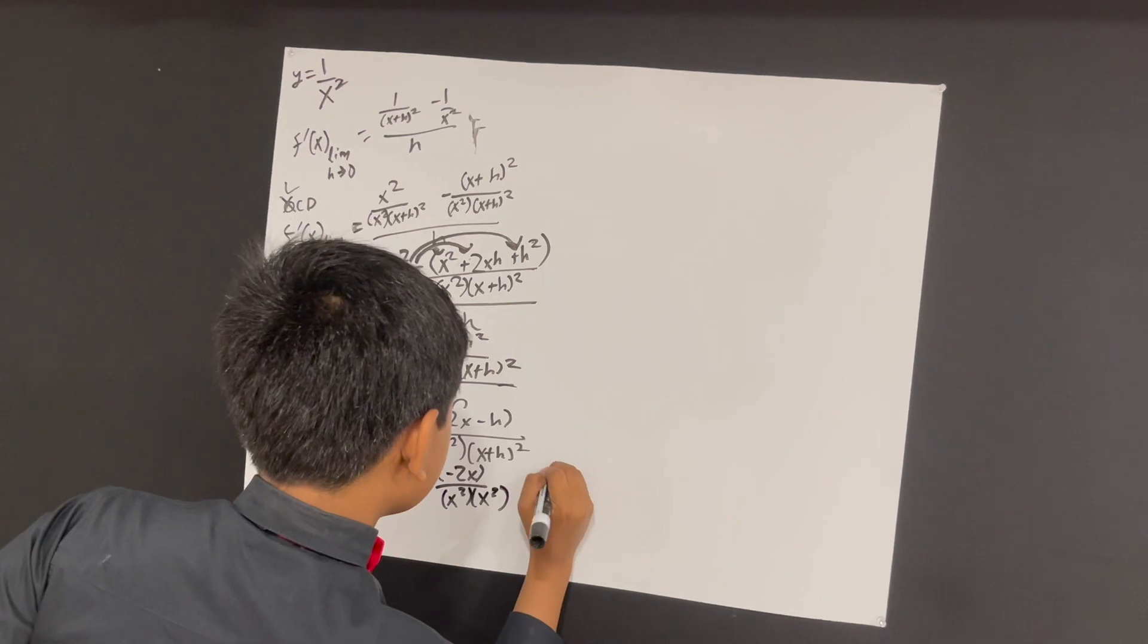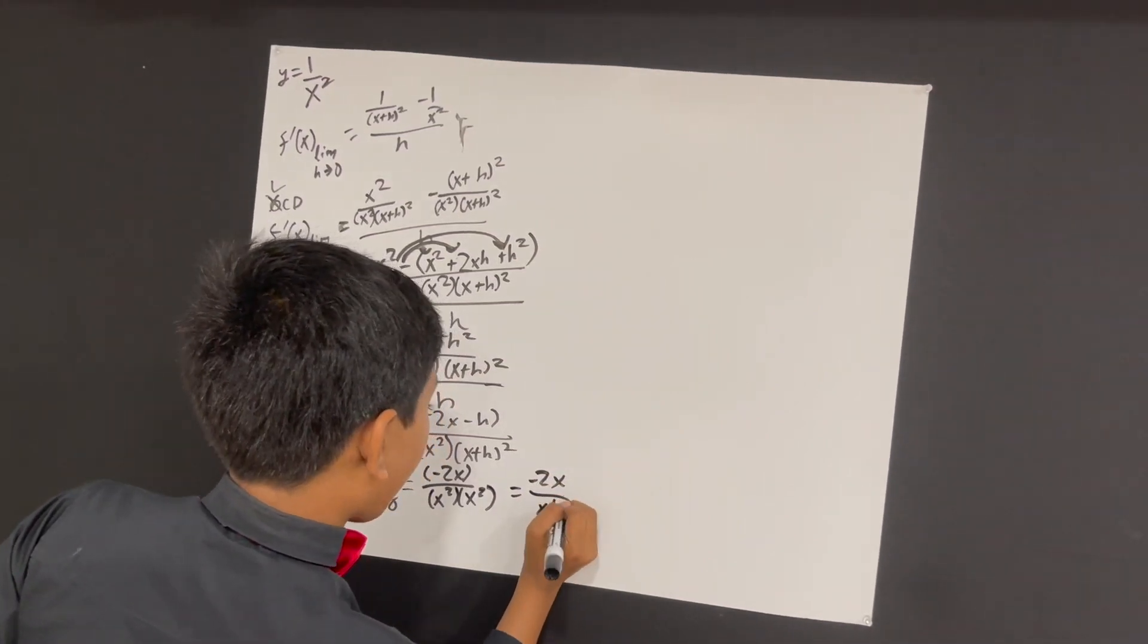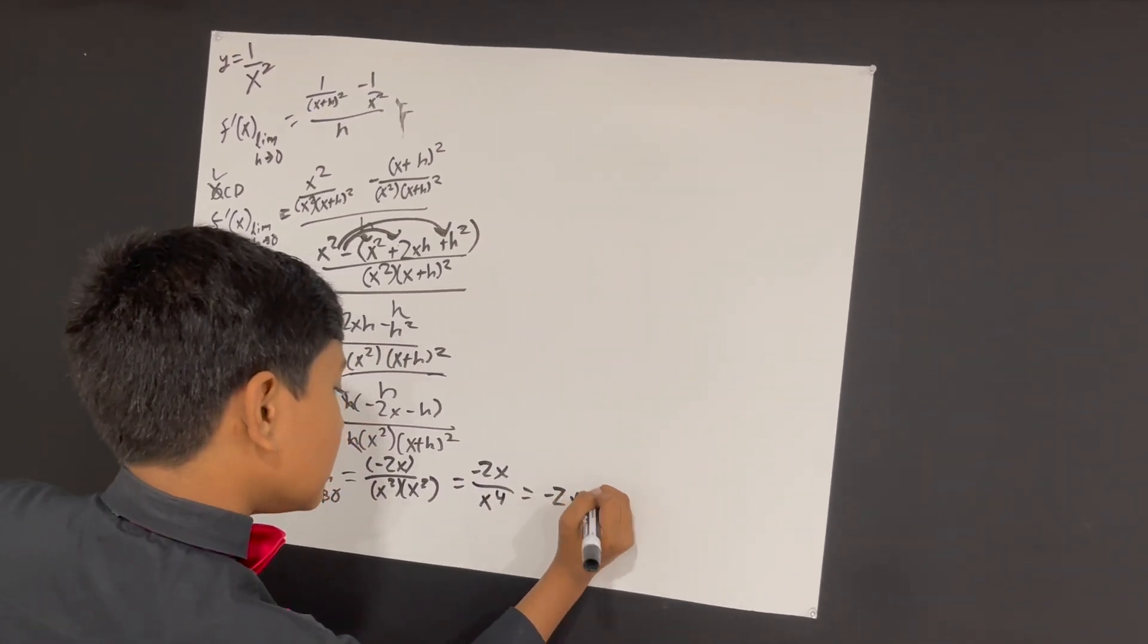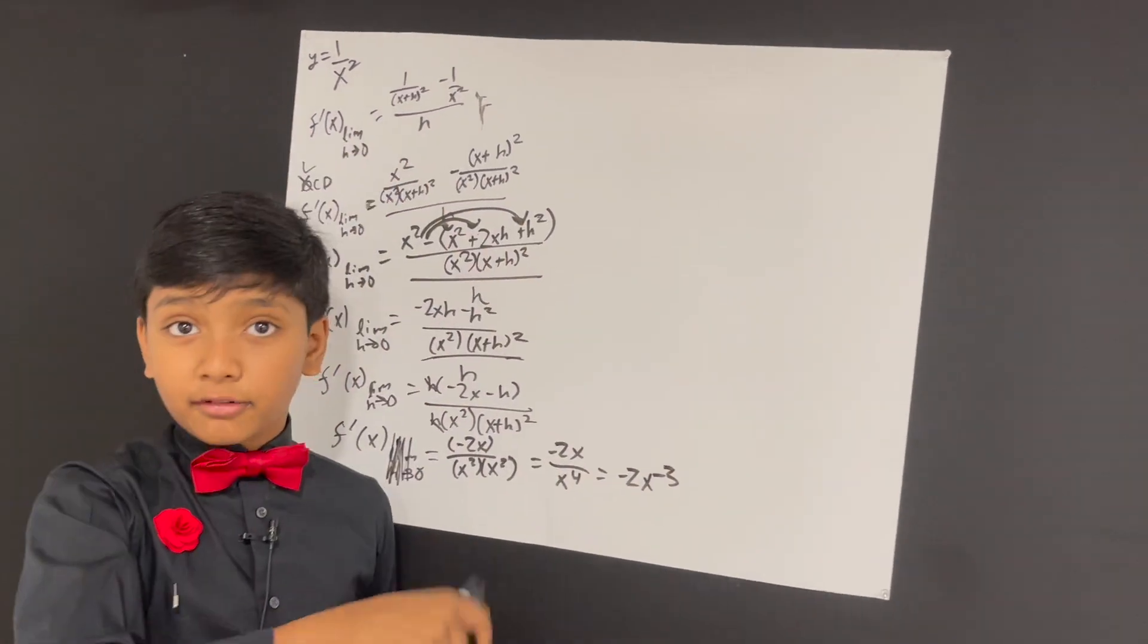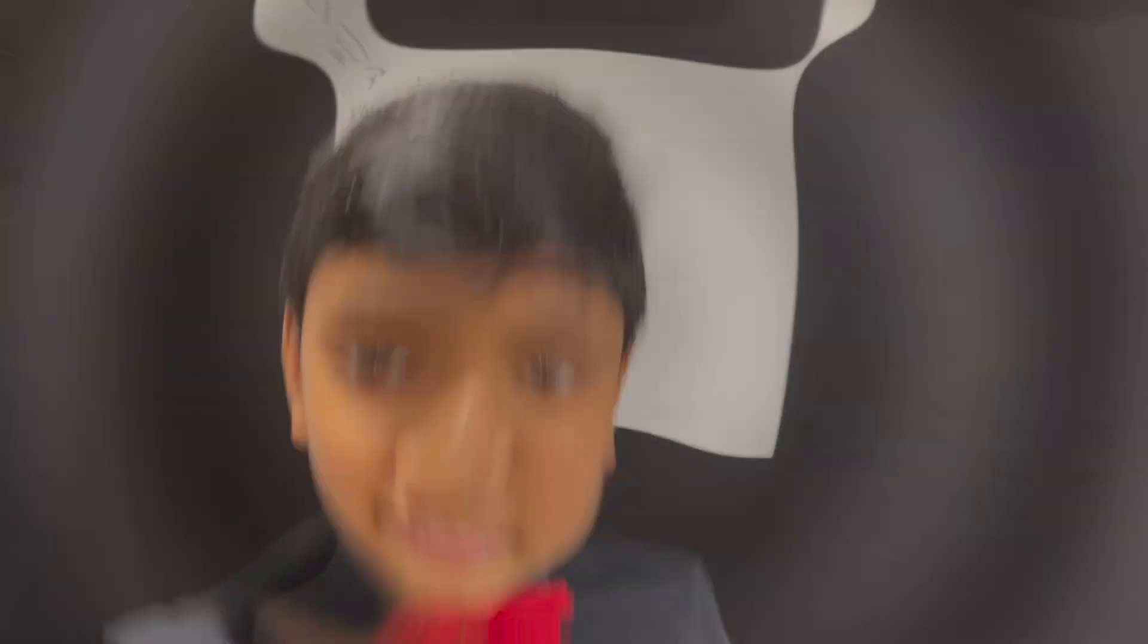Alright, and that gives us negative 2x over x to the 4, which is negative 2x to the minus 3. Thank you, everybody, for watching, and we'll see you in the next one.